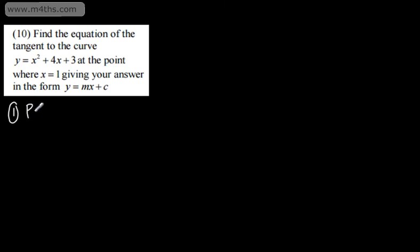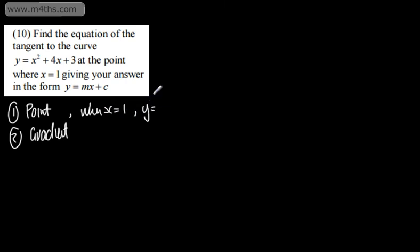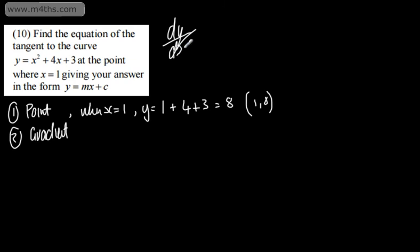Find the equation of the tangent to the curve y = x² + 4x + 3 at the point where x = 1, giving your answer in the form y = mx + c. We need two things: a point and a gradient. When x = 1, y is going to be equal to 1 squared plus 4 lots of 1 plus 3, which gives 8. So we've got the point (1, 8). Now I need a gradient: dy by dx, the gradient function, is going to be equal to 2x + 4.